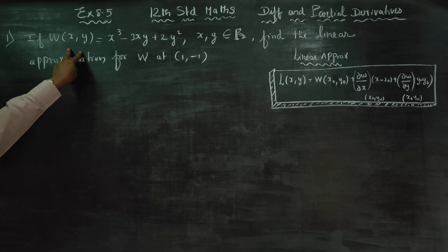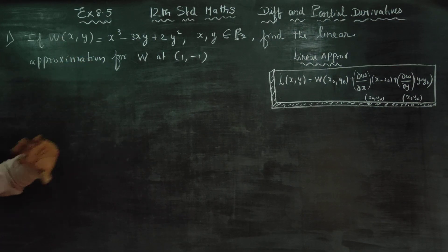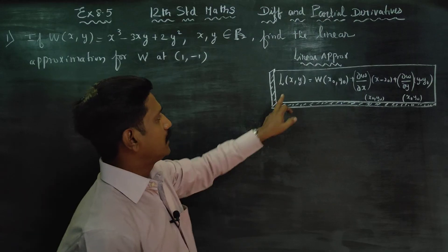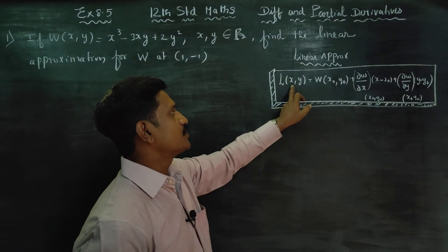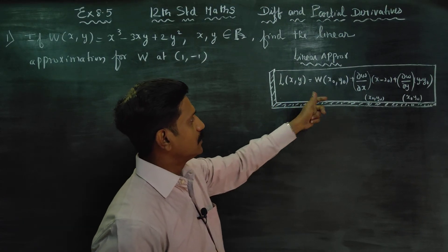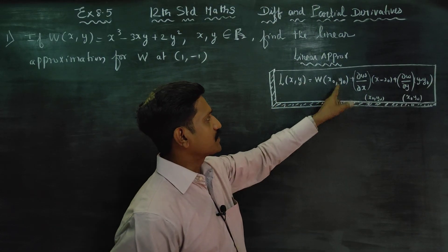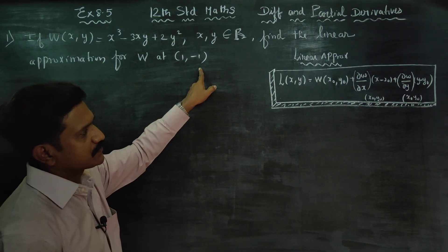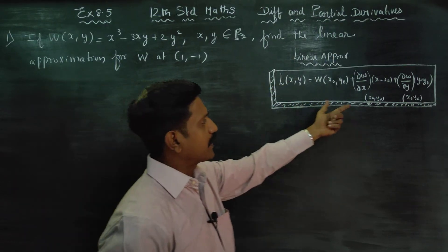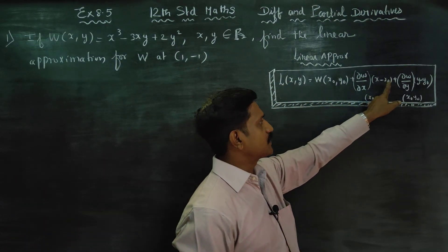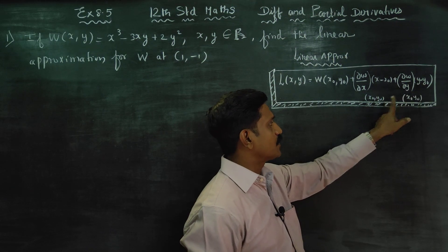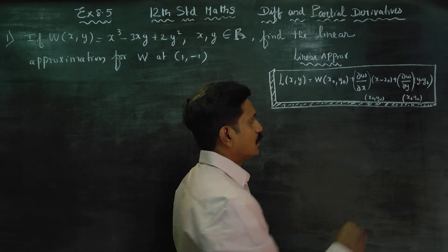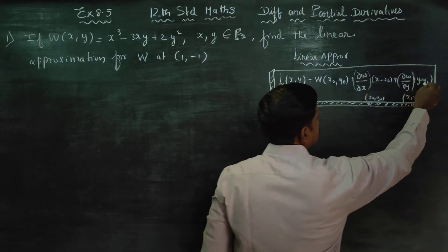Two variable function linear approximation: linear approximation of two variables is equal to the given function value at (x0, y0), plus the partial derivative dou w by dou x times (x minus x0) at (x0, y0), plus dou w by dou y times (y minus y0) at (x0, y0).